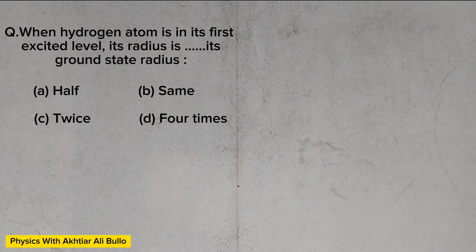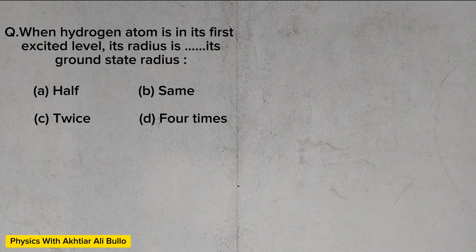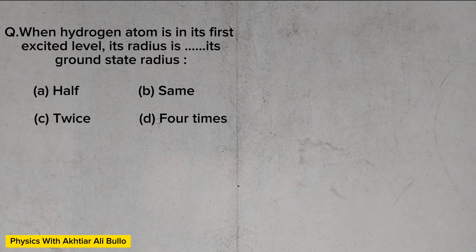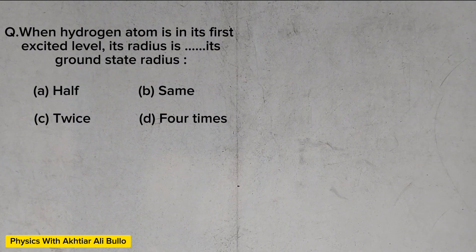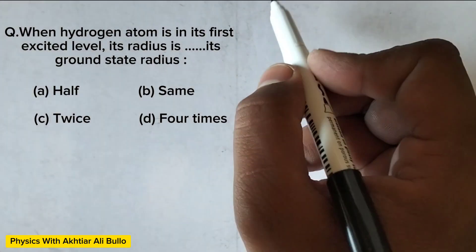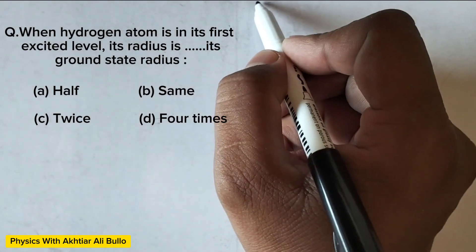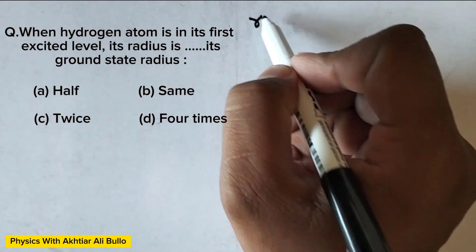The question is: when hydrogen atom is in its first excited level, its radius is dash its ground state radius. Options: a) half, b) same, c) twice, d) four times. The radius of nth orbit is calculated by the formula rn